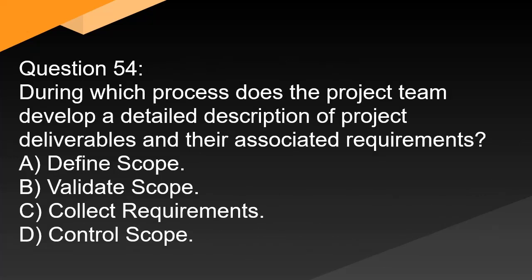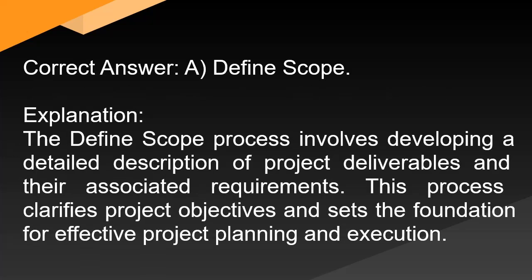Question 54: During which process does the project team develop a detailed description of project deliverables and their associated requirements? A. Define scope. B. Validate scope. C. Collect requirements. D. Control scope. Correct answer: A. Define scope. Explanation: The define scope process involves developing a detailed description of project deliverables and their associated requirements. This process clarifies project objectives and sets the foundation for effective project planning and execution.